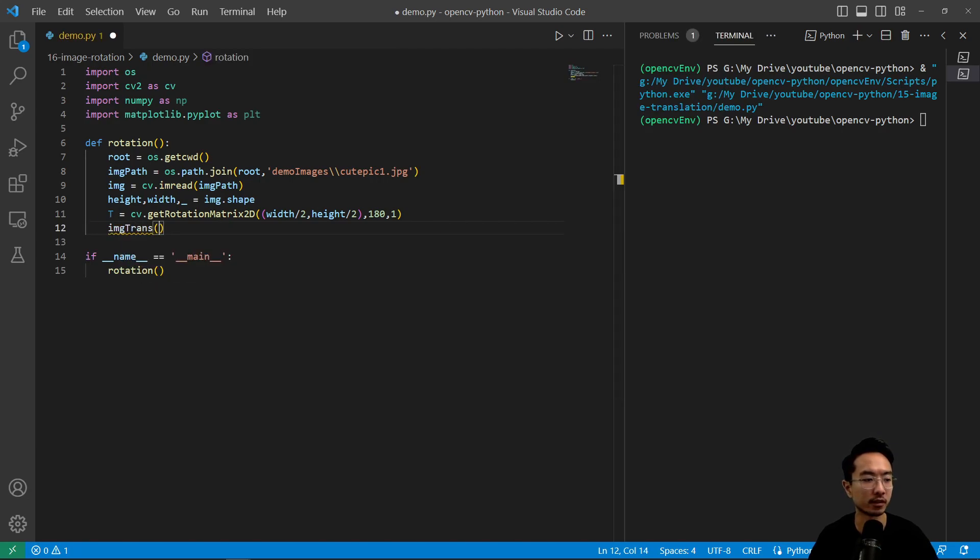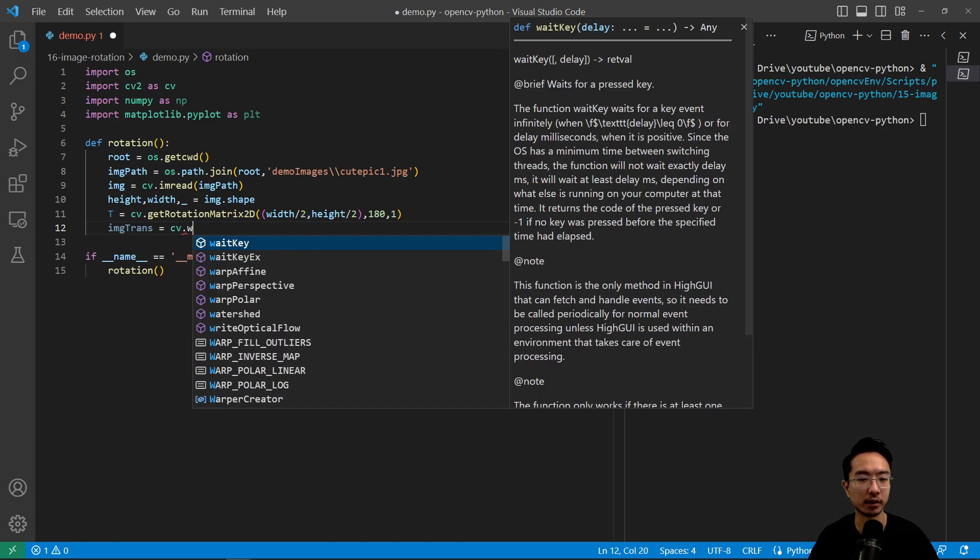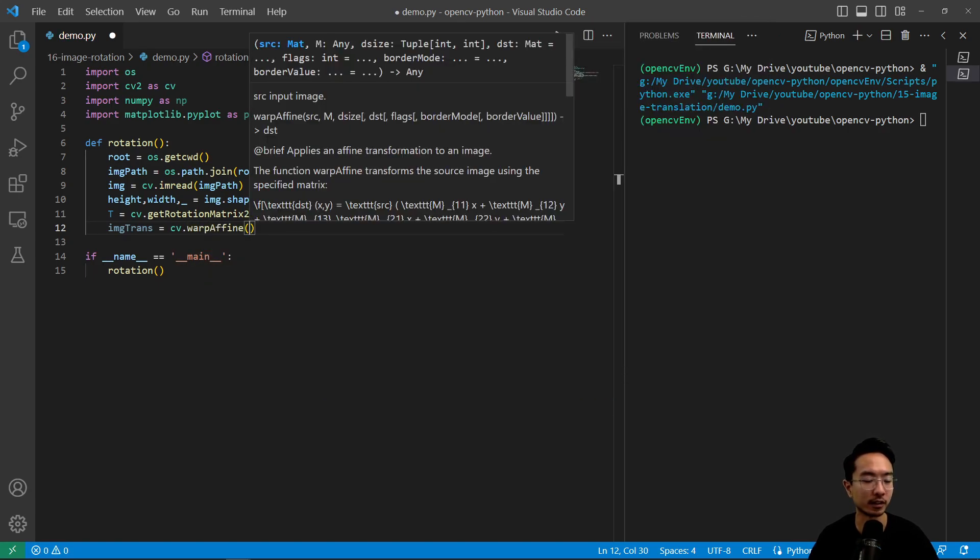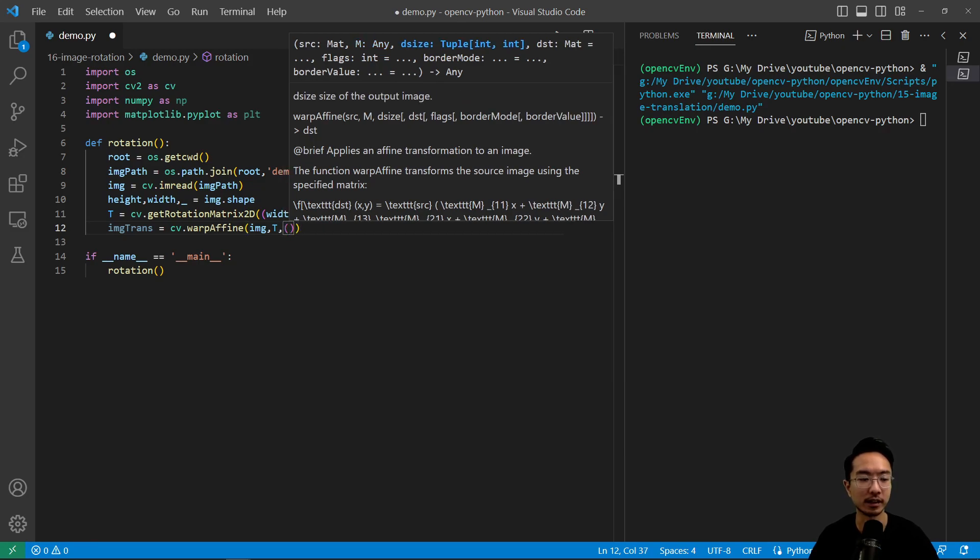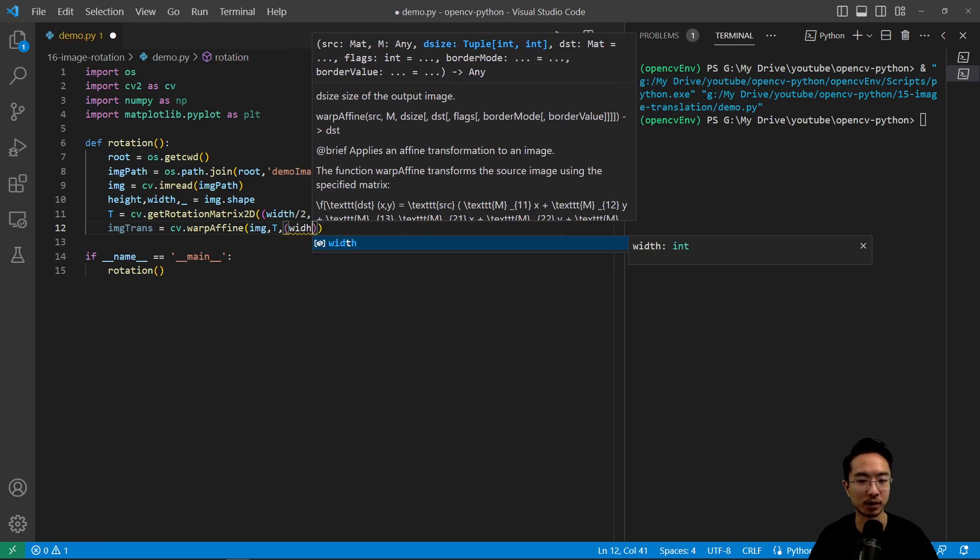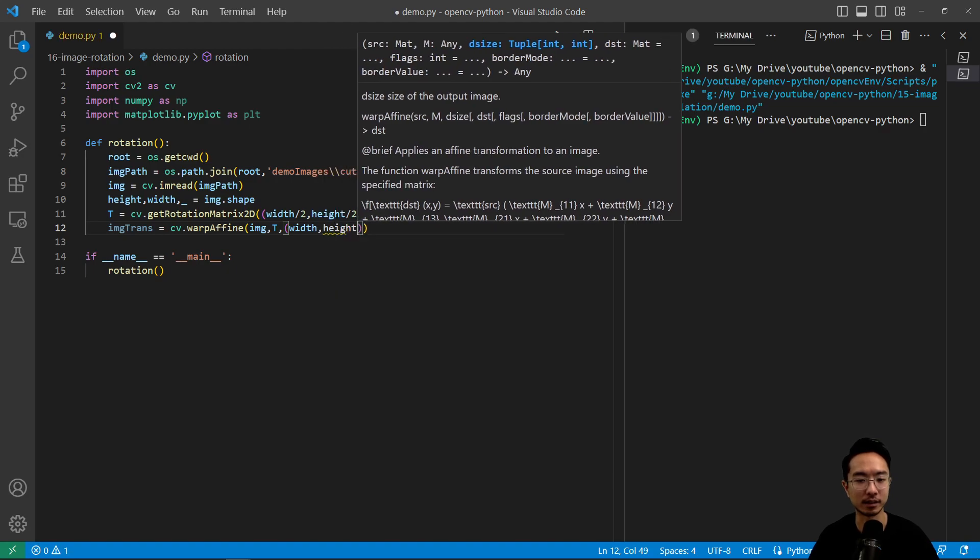So our transformed image is going to be image trans. And then we're going to call the warp affine function. And then pass in our original image, our transformation matrix, and then our output size, which is the width and height as a tuple.